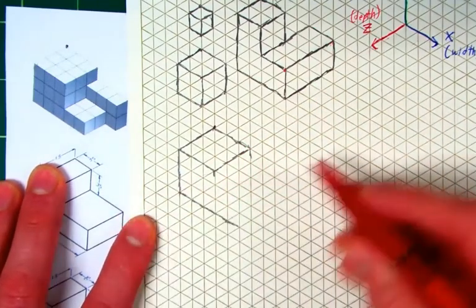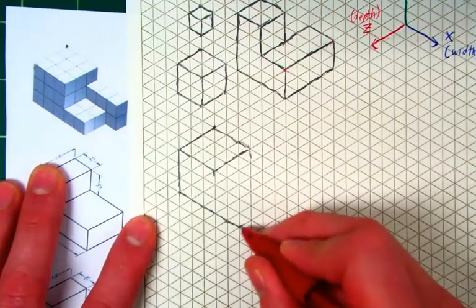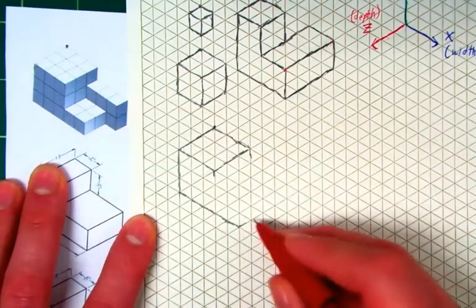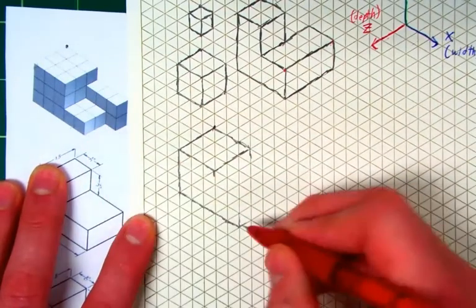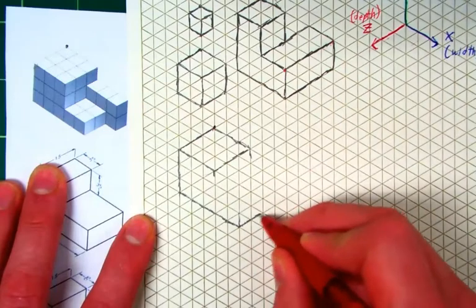From there it goes two directions: it goes back, which is up and to the right for us, but it also goes up. It goes up one and then it's going to go backwards two, or up into the right two—one, two.